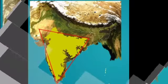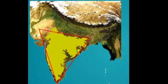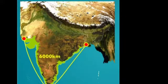The third physiographic division is the Peninsular Plateau. The plateau of India is roughly triangular in shape, and its boundaries are surrounded by hill ranges on all three sides.